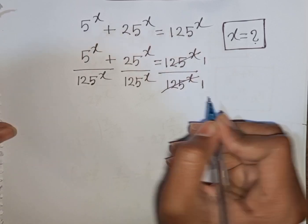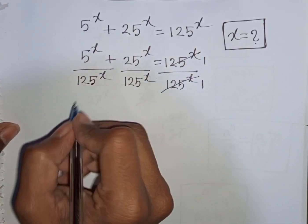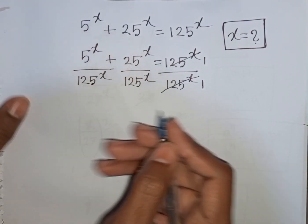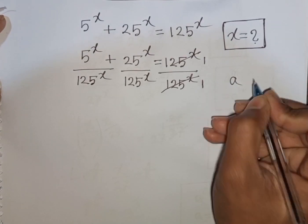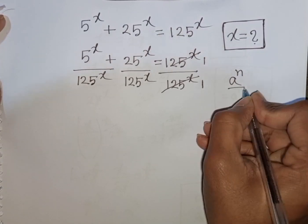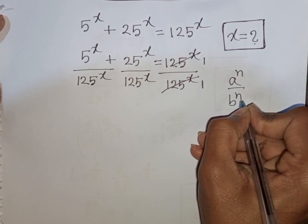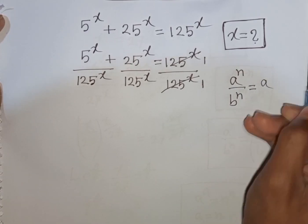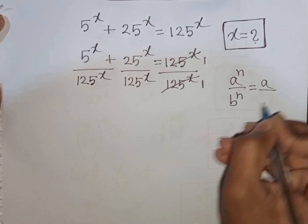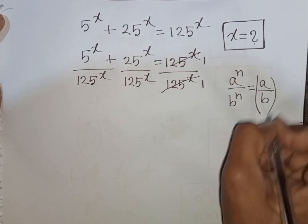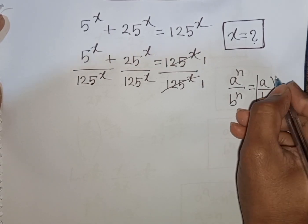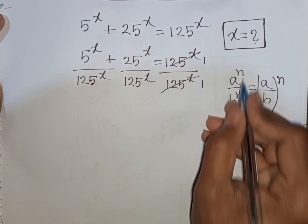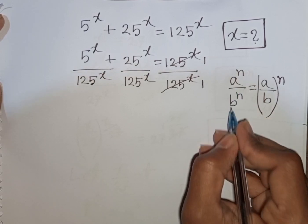Now we see x — same power but different base. Remember this formula: a power n over b power n is equal to (a over b) power n. That means n is the same power but with different bases.